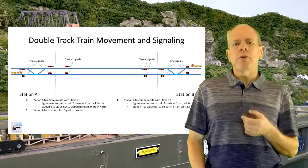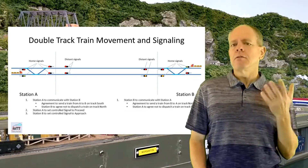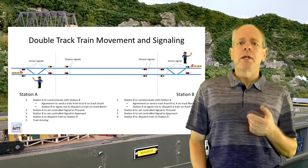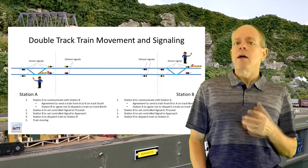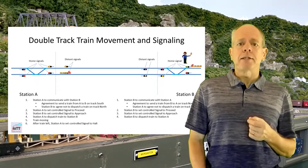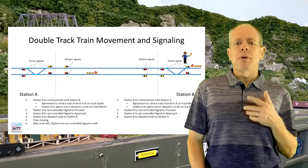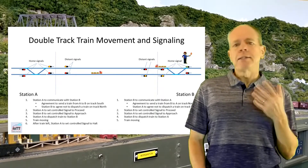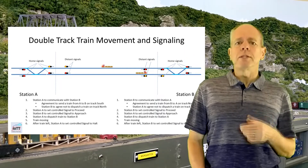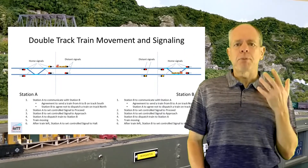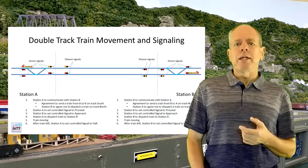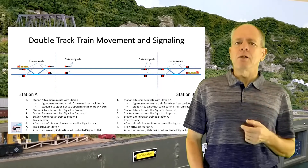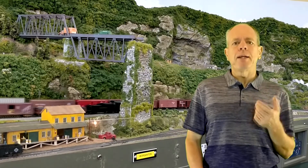The simplest way to increase capacity was double tracking, which really is the foundation for increasing throughput if there is traffic in both directions. With two operational tracks, traffic follows the same rules as before, but now there is a separate track dedicated to each direction. As a result, two train movements in opposite directions can take place simultaneously, and the sequence to initiate and control traffic is the same as before, just individual for each direction and independent of each other.